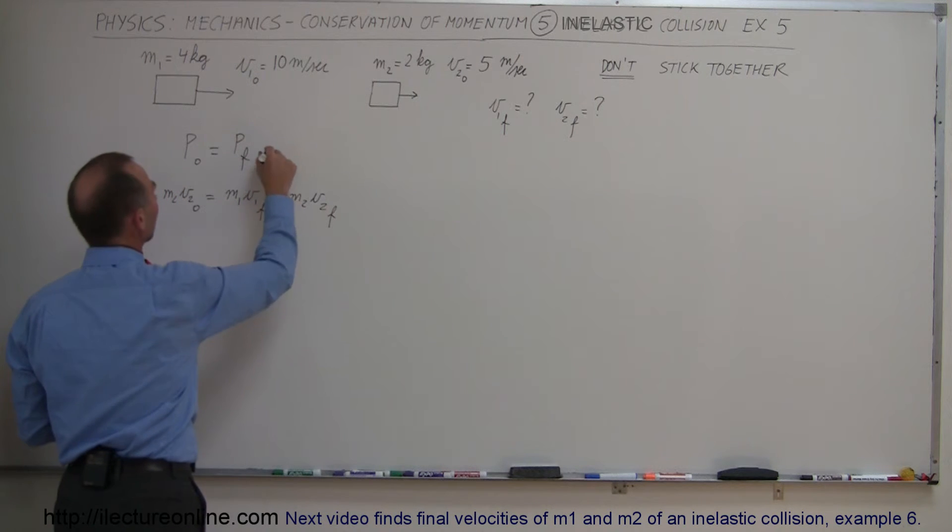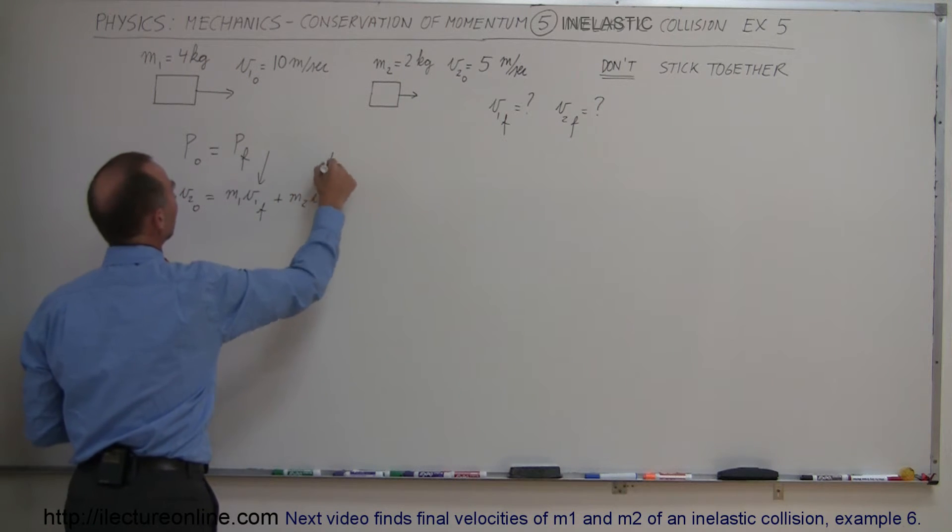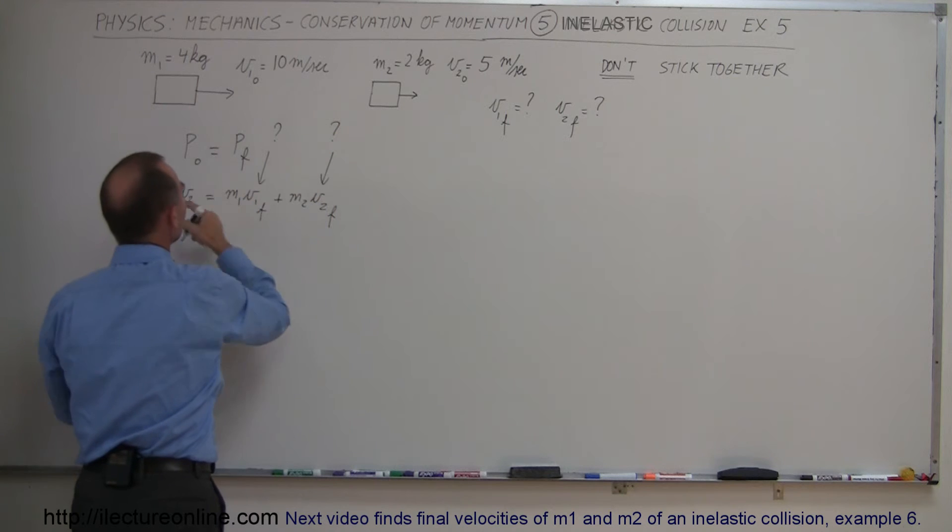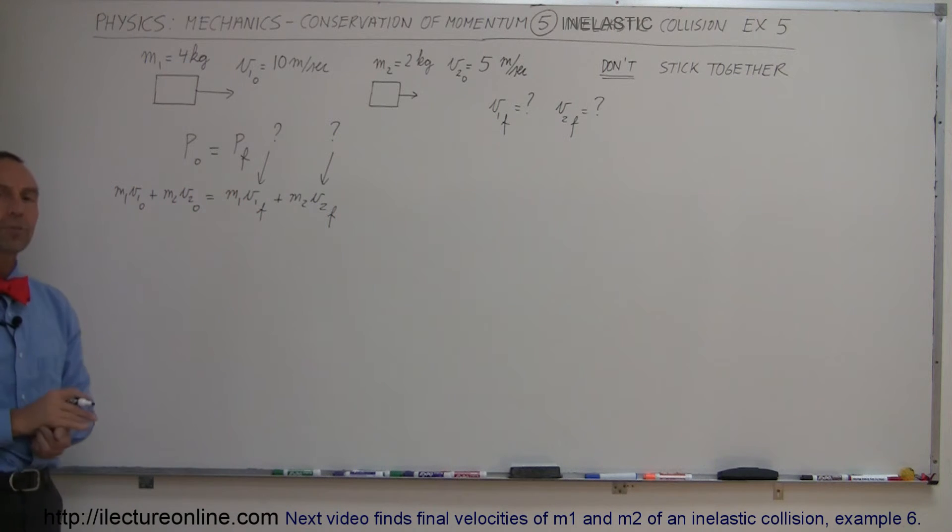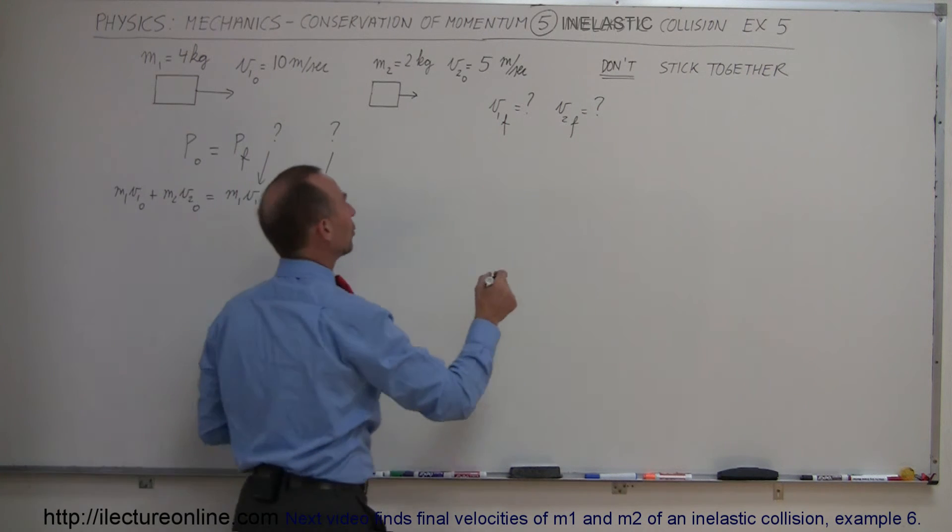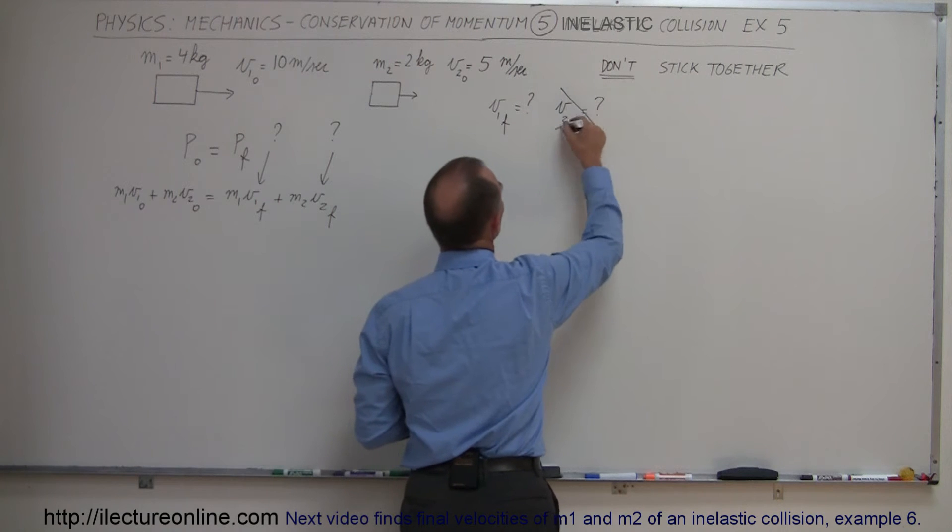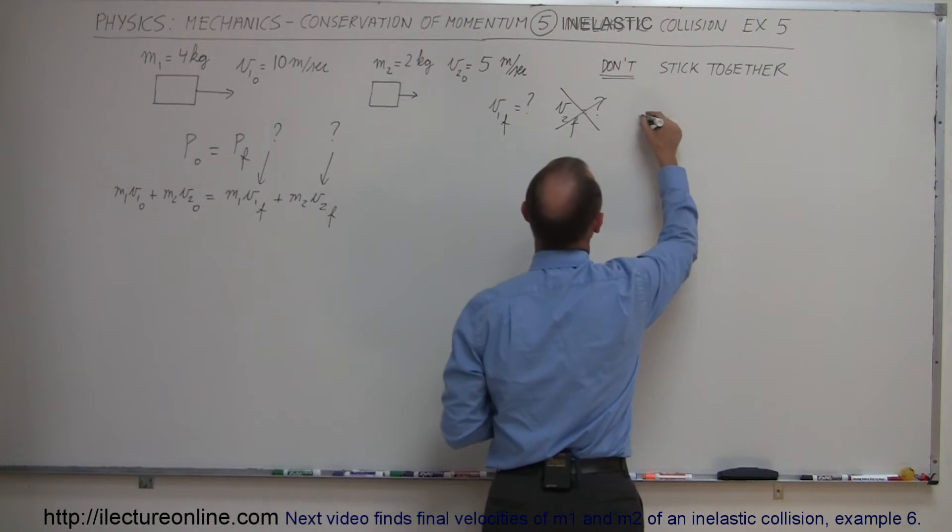Notice that both V1 final and V2 final are unknown and we only have one equation. So actually we cannot solve this problem unless some other piece of information is given to us. We're going to do this problem twice. In this example I'm going to give you one of the final velocities. In the other example we'll give you some information about their kinetic energy loss. So in this case we're not going to ask what the V2 final is.